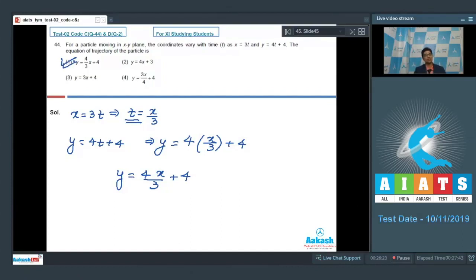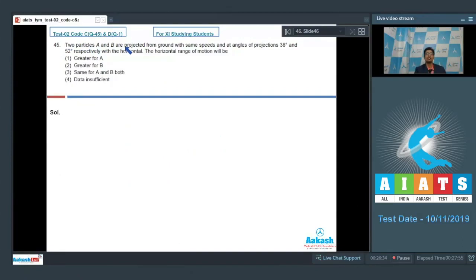Let us proceed to the last question of the test, which is question number 45. Question number 45 says two particles A and B are projected from ground with same speeds and at angles of projections 38 degrees and 52 degrees respectively with the horizontal. The horizontal range of motion will be: greater for A, greater for B, same for A and B both, or data insufficient. We must know that if angles of projections theta 1 and theta 2 add up to 90 degrees, then in those cases the range for both angles of projection would be same, given that they are projected with the same speed.